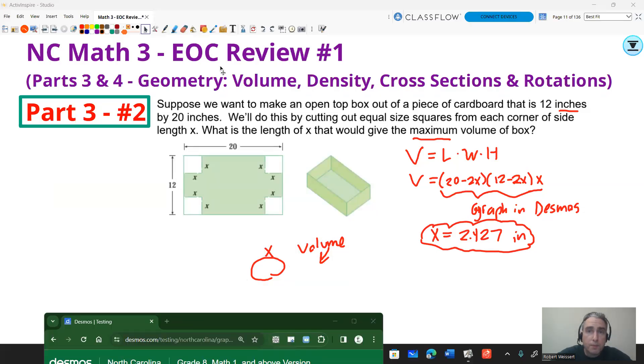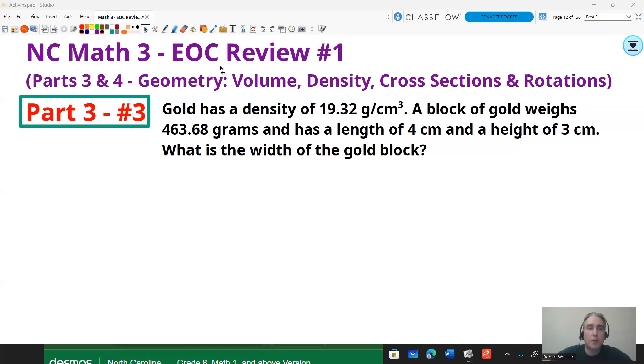Let's go on to the next question. Part three, number three. Gold has a density of 19.32 grams per cubic centimeter. A block of gold weighs 463.68 grams and has a length of 4 centimeters and a height of 3 centimeters. What is the width of the gold block? This question gives you density, and so now we've got to figure out what formula we're going to use with the density formula in accompaniment with the mass and the volume of the box.